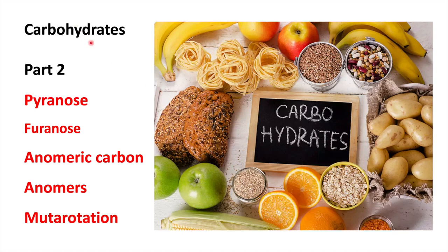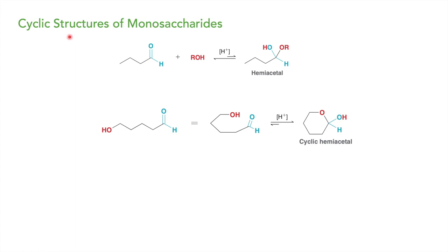Dear viewers, today in carbohydrates we will study pyranose, furanose, anomeric carbon, anomers, and mutarotation. Today we will study the cyclic structure of monosaccharides. In our previous video we studied only the open chain form of monosaccharides — the structures of glucose, fructose, and many other monosaccharides. The link to that video is in the description box.